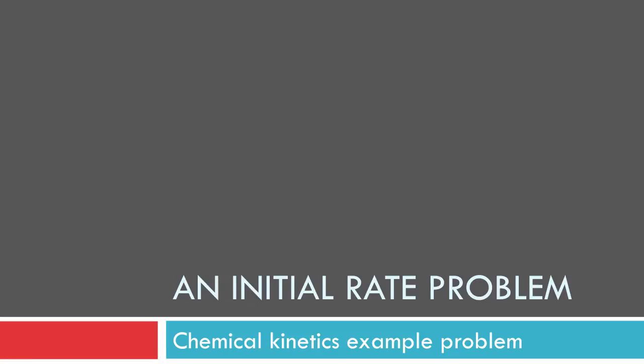Hi chem students, we're going to do an initial rate problem, which is a type of kinetics problem where we have experimental data and try to find the experimental rate law from that. It's a common problem and one that you should probably master because you'll likely see it on an exam or two.